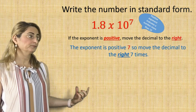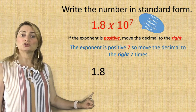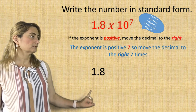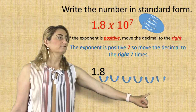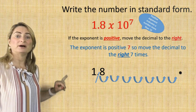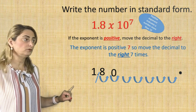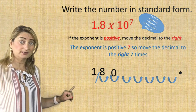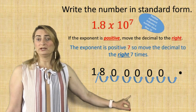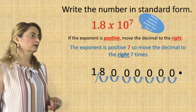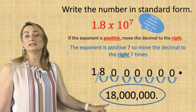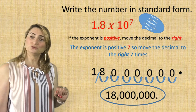Write down the number and move the decimal to the right to make the number bigger — 7 times: 1, 2, 3, 4, 5, 6, 7. Now put the decimal there, but make sure you erase the original decimal because you can't have two on the same number. Fill out the empty spaces with zeros. You end up with 18 million, and that's a huge number. So a positive exponent is an indication the number has a huge value.